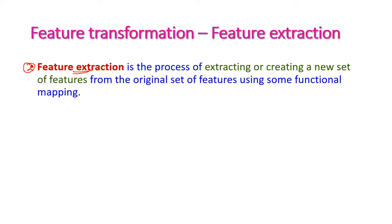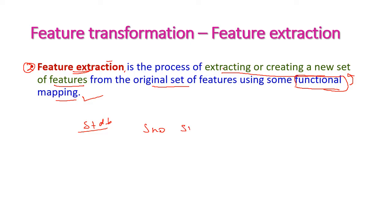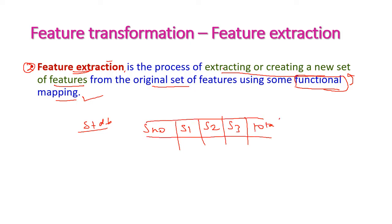Feature extraction is the process of creating a new set of features from the original set of features using some functional mapping — that is, by using some mathematical computation. For example, from a student database with subject 1, subject 2, and subject 3 marks, we can create total and average. The sum of all three fields is the total, and total divided by 3 is the average. Here we are using functional mapping between the features.